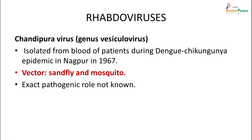Rhabdoviruses include Chandipura virus, genus Vesiculovirus, which was isolated from the blood of patients during the dengue-chikungunya epidemic in Nagpur in 1967. The vector is sandfly and possibly also mosquito. Although it was isolated earlier, the exact pathogenic role is not well known to date.